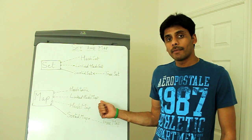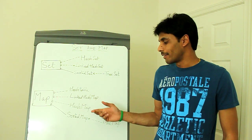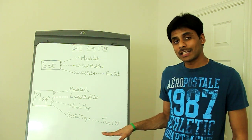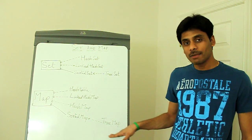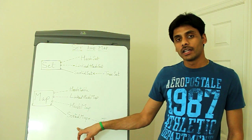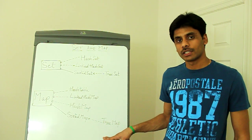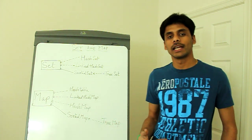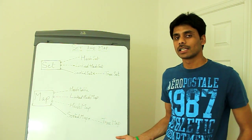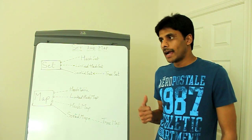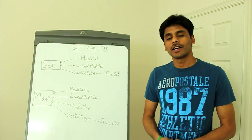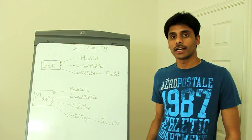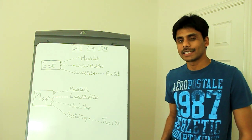A LinkedHashMap maintains order whereas the HashMap doesn't. The TreeMap implements the SortedMap interface and, like the TreeSet, sorts elements as you add them using the keys. By default it sorts in ascending order, but you can pass a parameter to the constructor to sort in descending order instead.